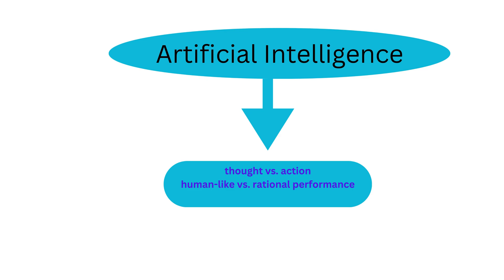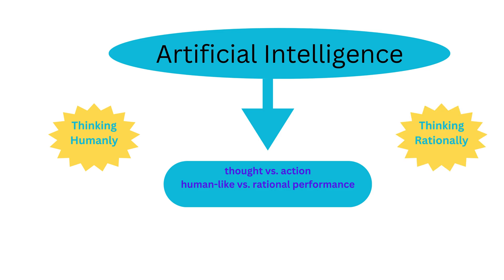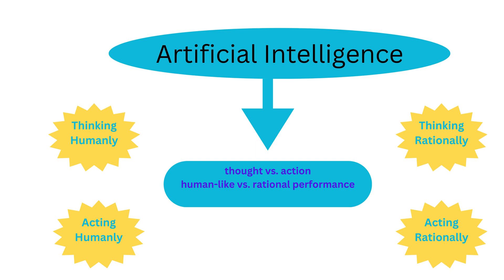Central to understanding AI are four foundational pillars: thinking humanly, thinking rationally, acting humanly, and acting rationally. These pillars not only define AI's ambitions, but also guide its development across various domains.